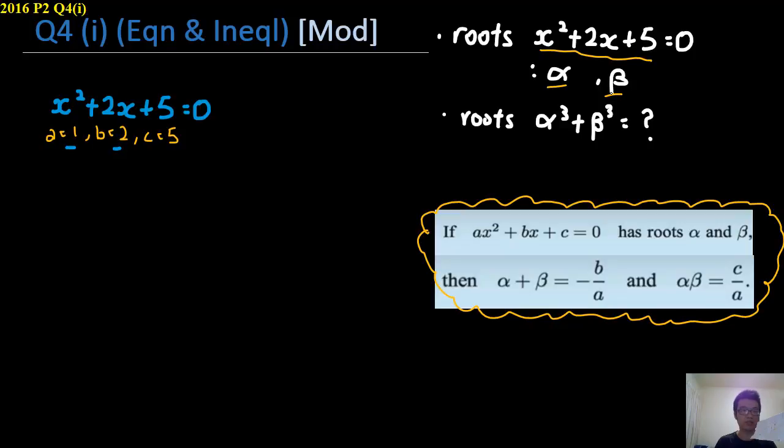So a equals 1, b equals 2, c equals 5. So here sum is negative 2, product is 5.